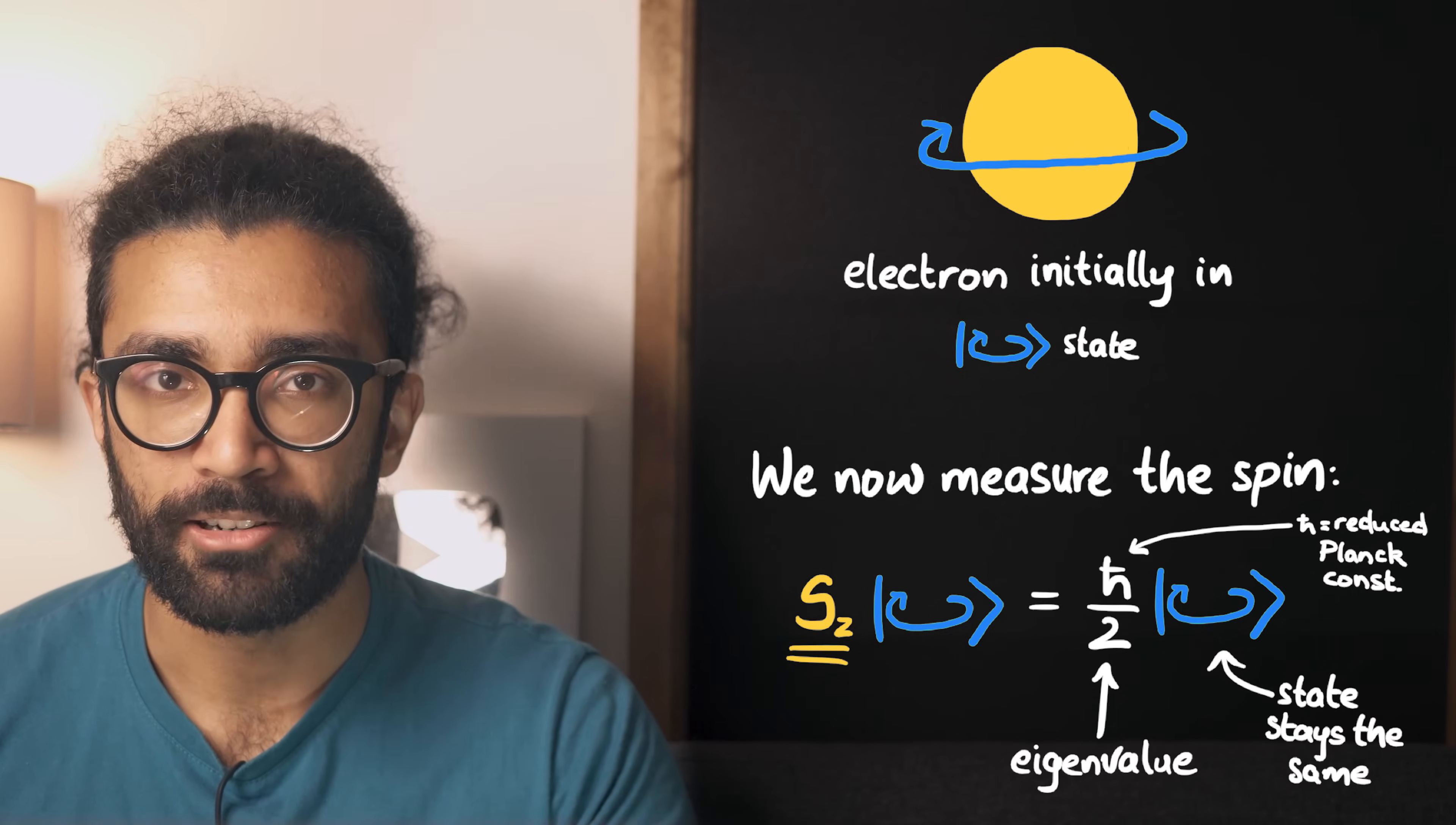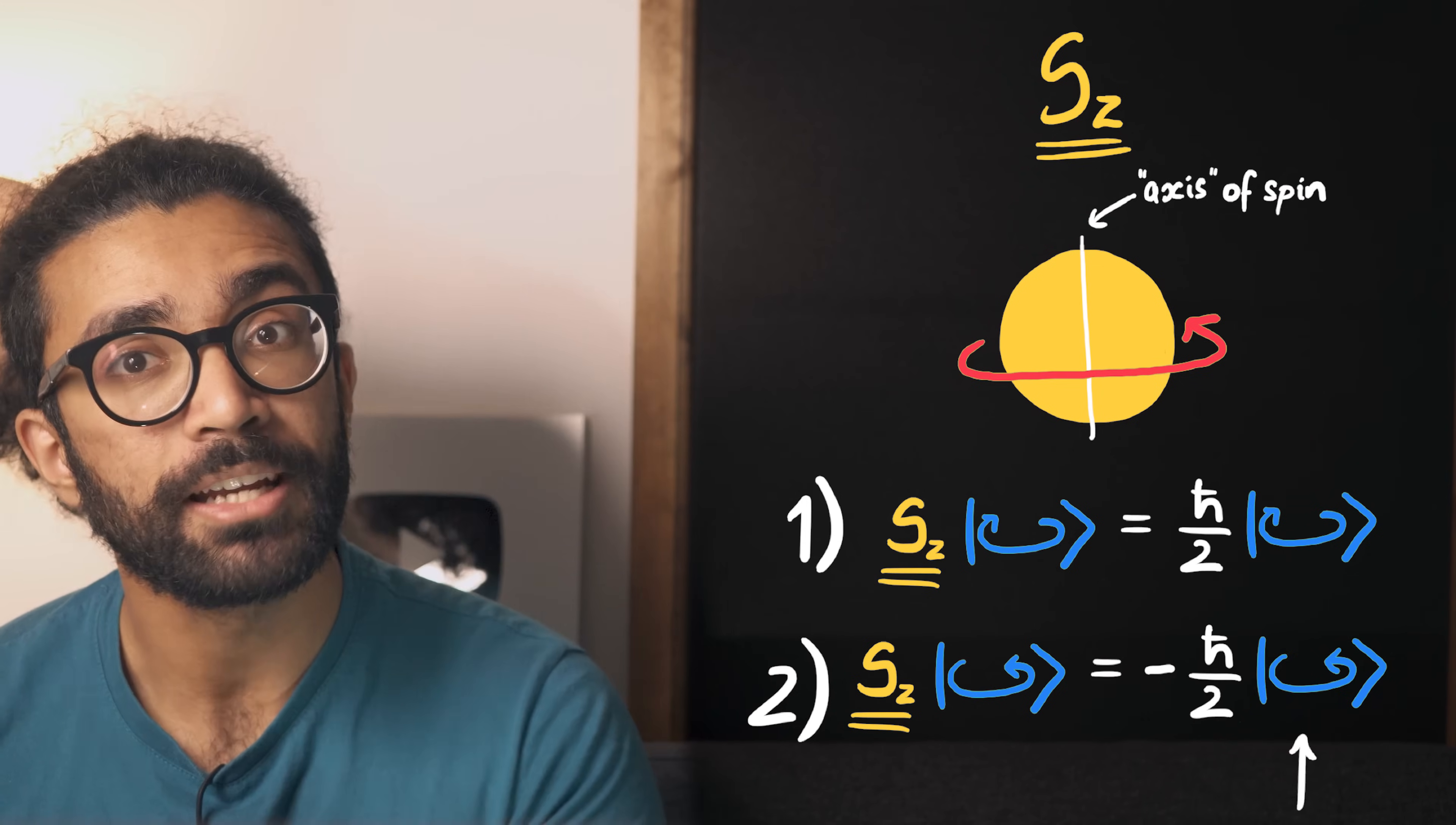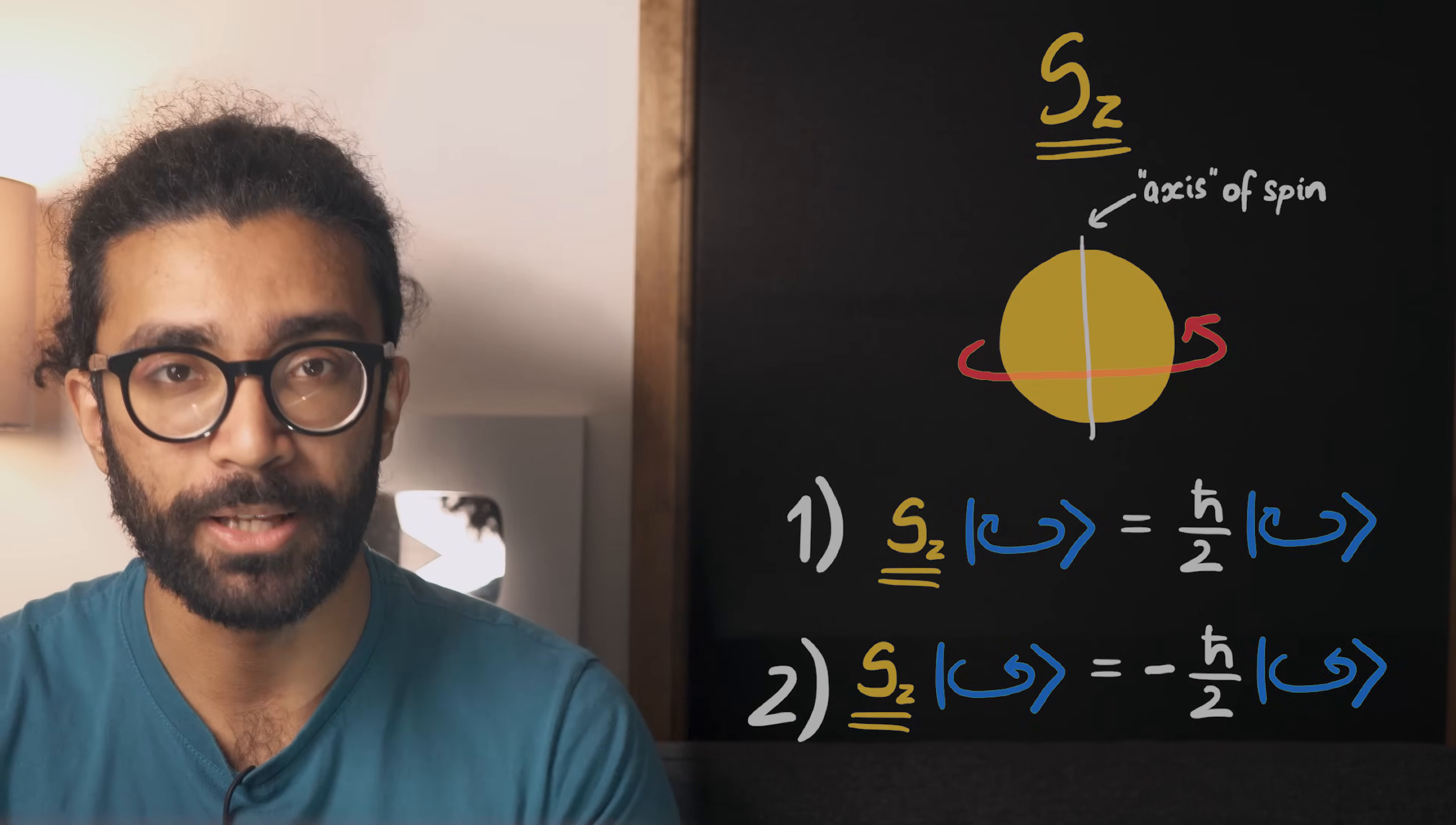Just for the sake of clarity, this operator that represents a spin measurement in this direction for an electron actually has two eigenstates. The other eigenstate is the anticlockwise spin. In other words, if our electron was in this state and we measured it, the measurement would not change the state and the result would be minus h-bar over two. The electron behaves in this state as if it's spinning in the opposite direction.